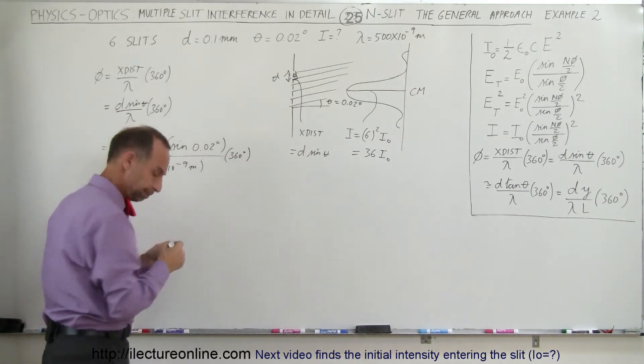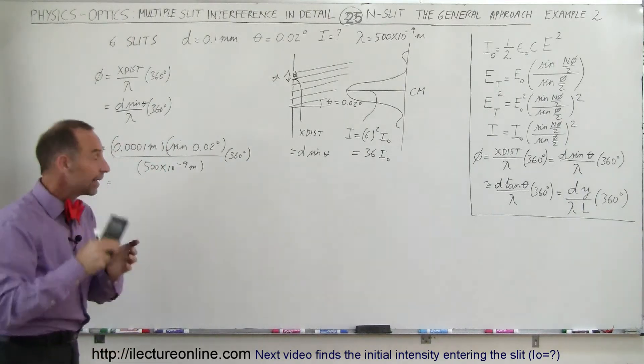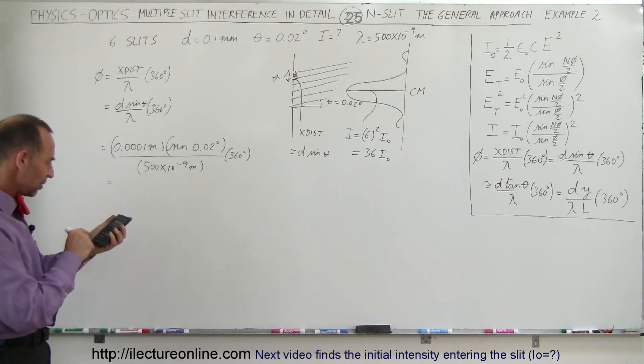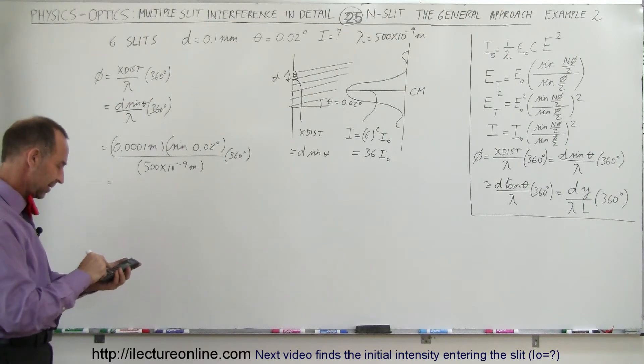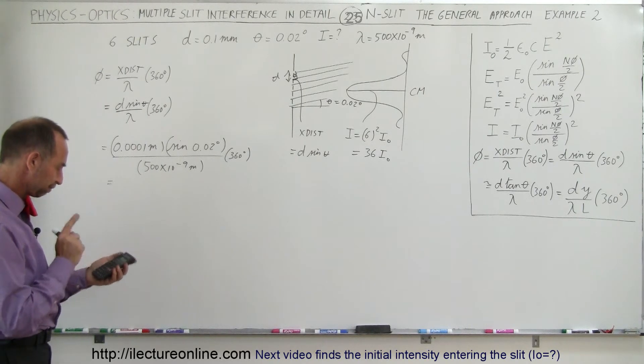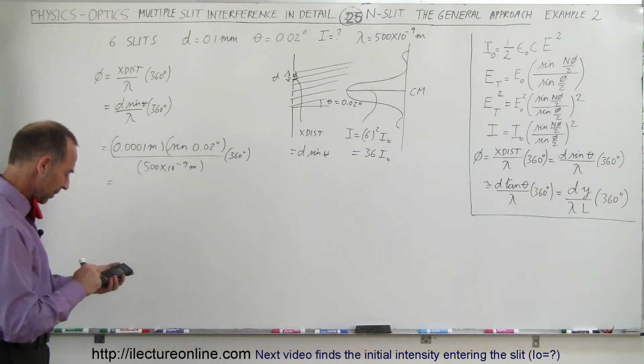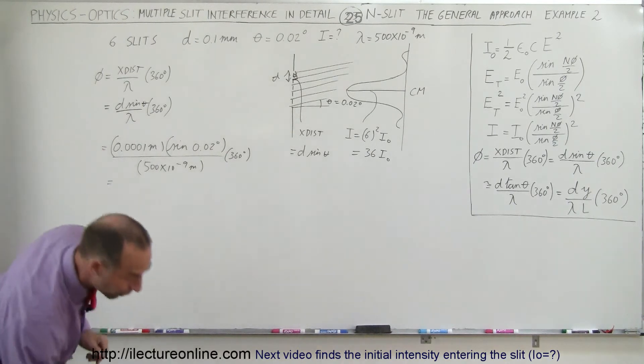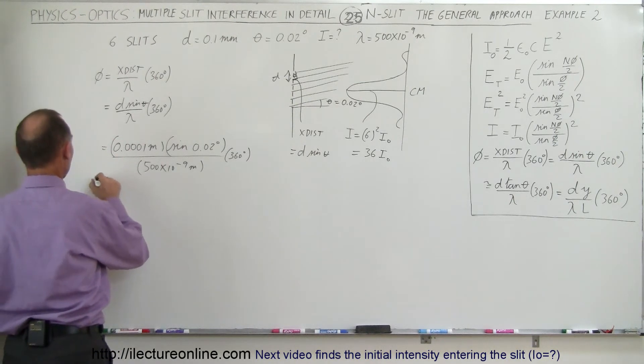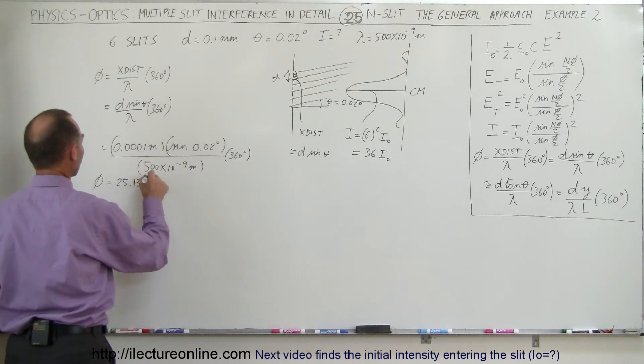So that should give us the phase angle. So with the calculator, let's find out what this is equal to. 0.0001 times 0.02, take the sine of that, and divide by 500 e to the minus 9, and multiply it times 360, and we get a phase angle of 25.13 degrees. So the phase angle is equal to 25.13 degrees.